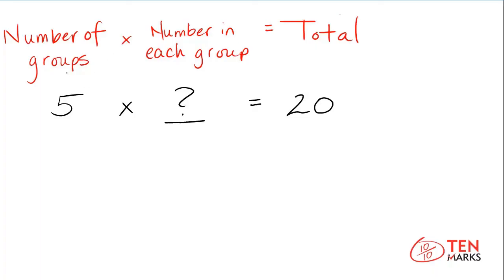The first number here is a five, which means the number of groups is five. The last number is a twenty, which means the total is twenty. The information you're still trying to find is how many are in each group.